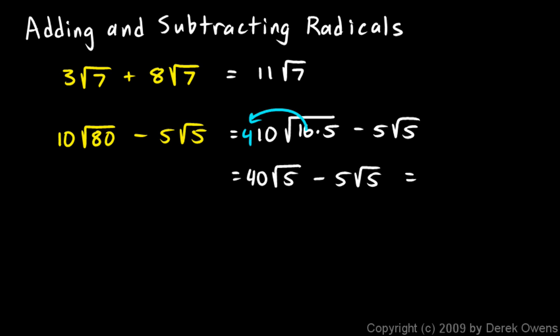40 of these minus 5 of these is 35 of these. So 35 root 5 is the answer.